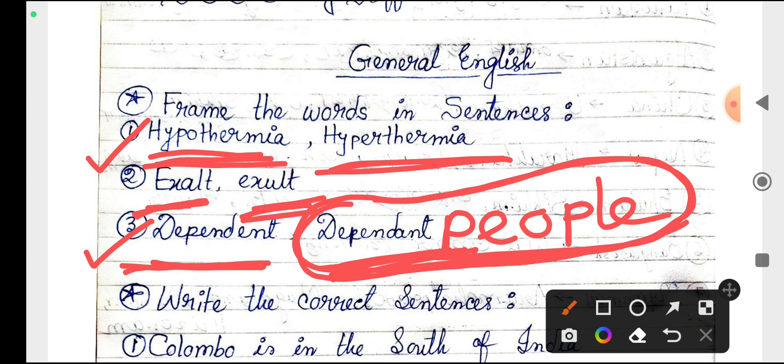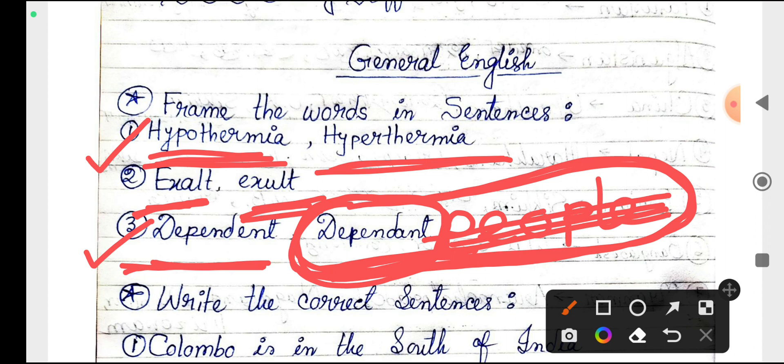But dependent people, if I say, dependent itself, people don't need to say it. Dependent itself is a noun and its meaning is dependent. Dependent is a noun and it means dependent people.